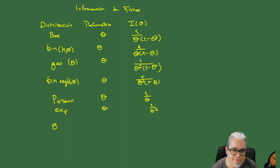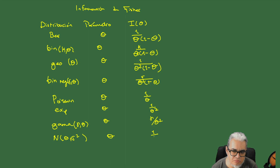La gamma con parámetros gamma y theta: la información es gamma sobre theta cuadrada. La normal con parámetros theta y theta, para theta, es 1 sobre theta cuadrada. Y la normal con parámetros mu y theta, para theta, es 1 sobre 2 theta cuadrada.